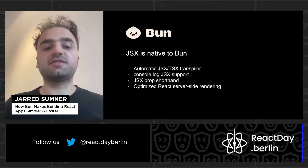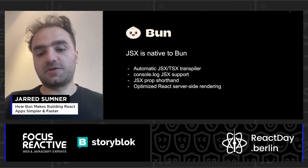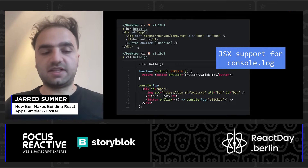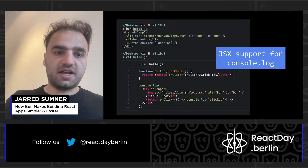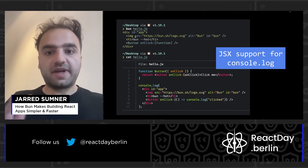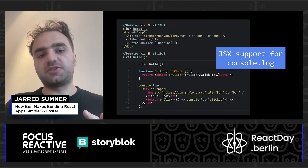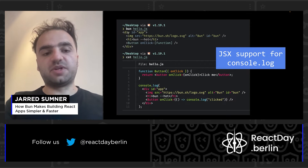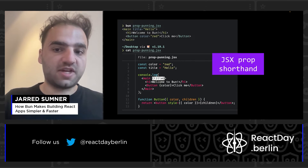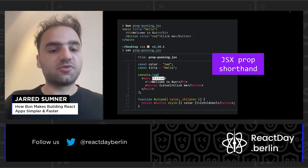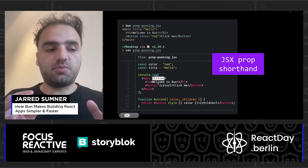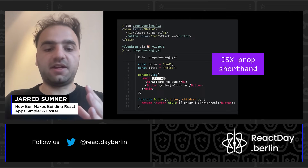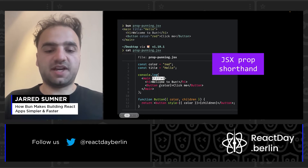You can console.log JSX. You can do JSX prop punning. And we have extremely optimized React server-side rendering. This is what it looks like when you console.log a JSX element in Bun — instead of printing the object representation with the symbols and all that, it actually just pretty-prints it like HTML. It highlights the component in blue instead of green to indicate that it's an element versus a component. JSX prop punning means that instead of typing the property name when it's the same identifier as the value, you can just omit the value — it's the equivalent of object destructuring syntax but for JSX.